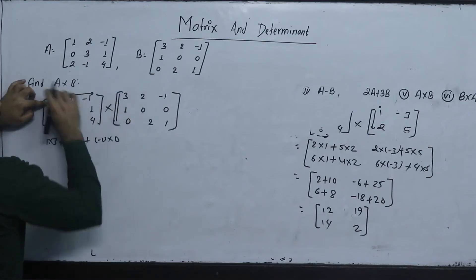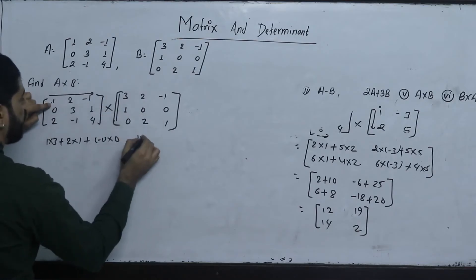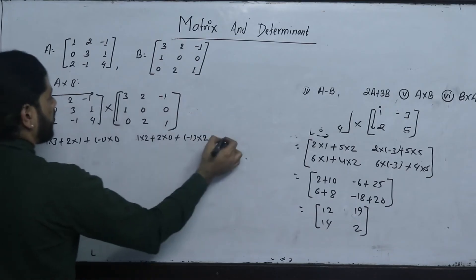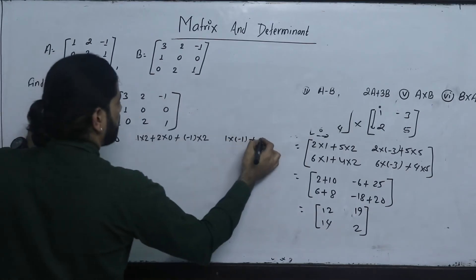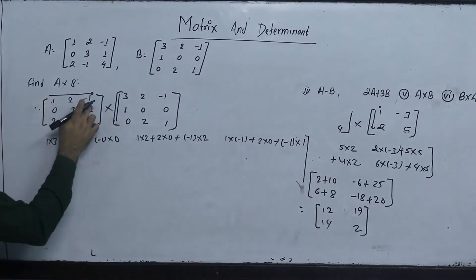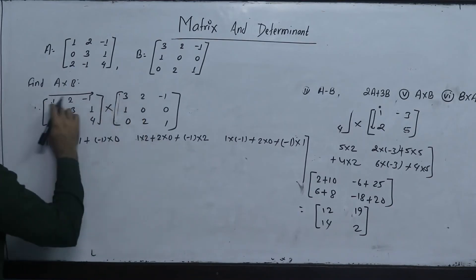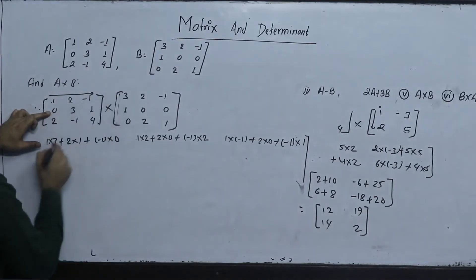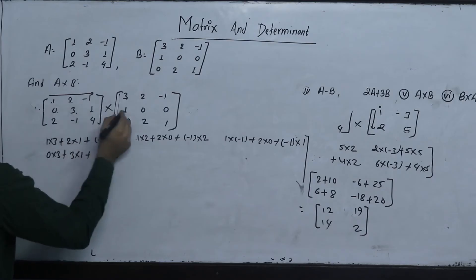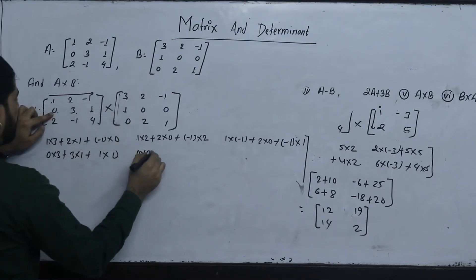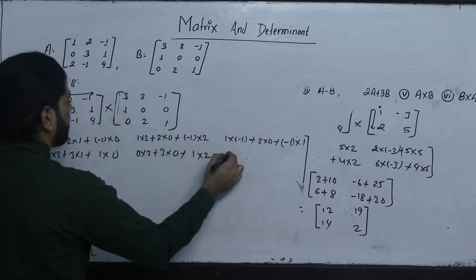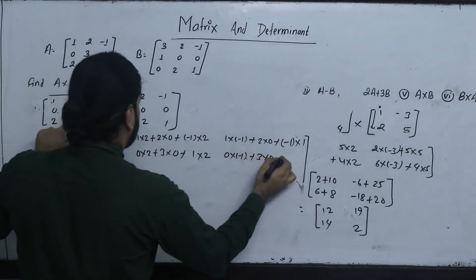Second row, first column: 0 into 3 plus 3 into 1 plus 1 into 0. Second row, second column: 0 into 2 plus 3 into 0 plus 1 into 2. Second row, third column: 0 into minus 1 plus 3 into 0 plus 1 into 1. Third row, first column: 2 into 3 plus minus 1 into 1 plus 4 into 0. Third row, second column: 2 into 2 plus minus 1 into 0 plus 4 into 2. Third row, third column: 2 into minus 1 plus minus 1 into 0 plus 4 into 1.